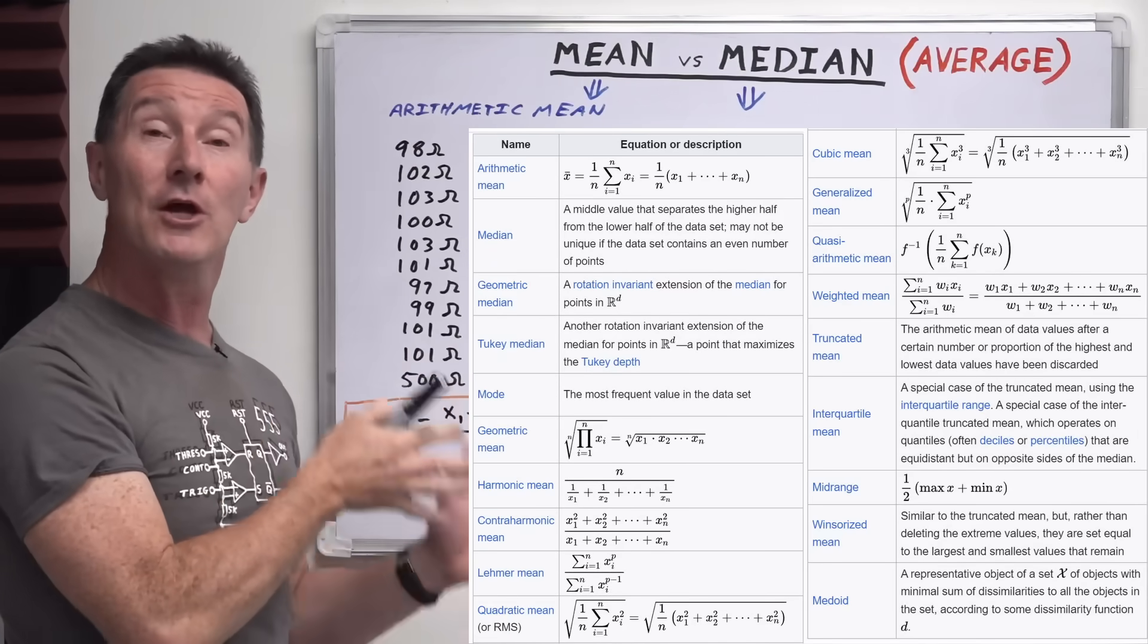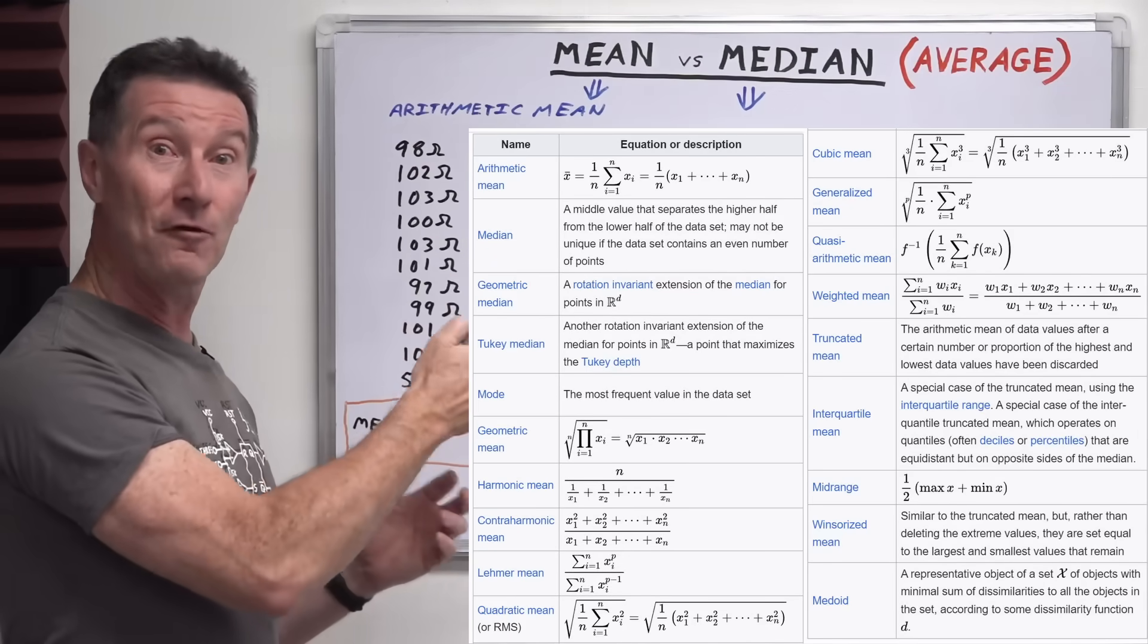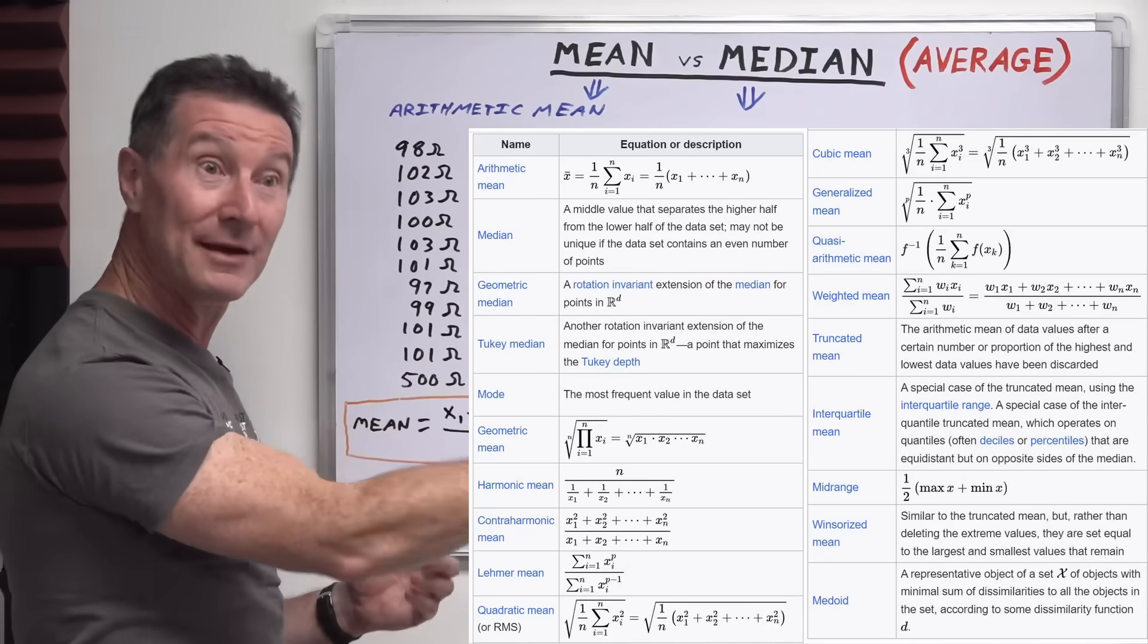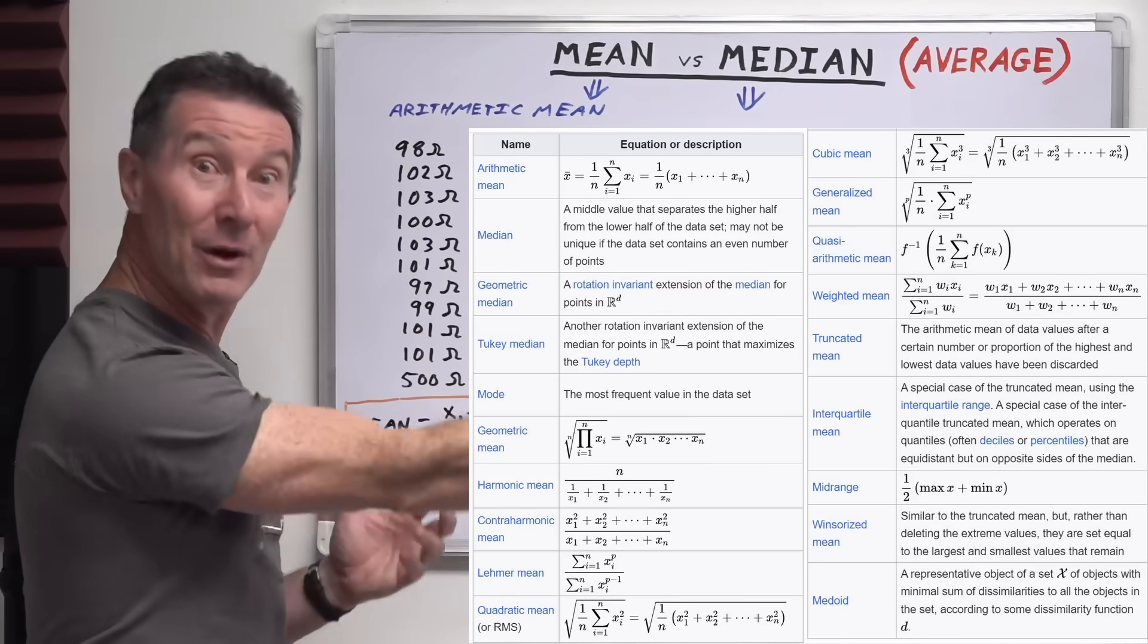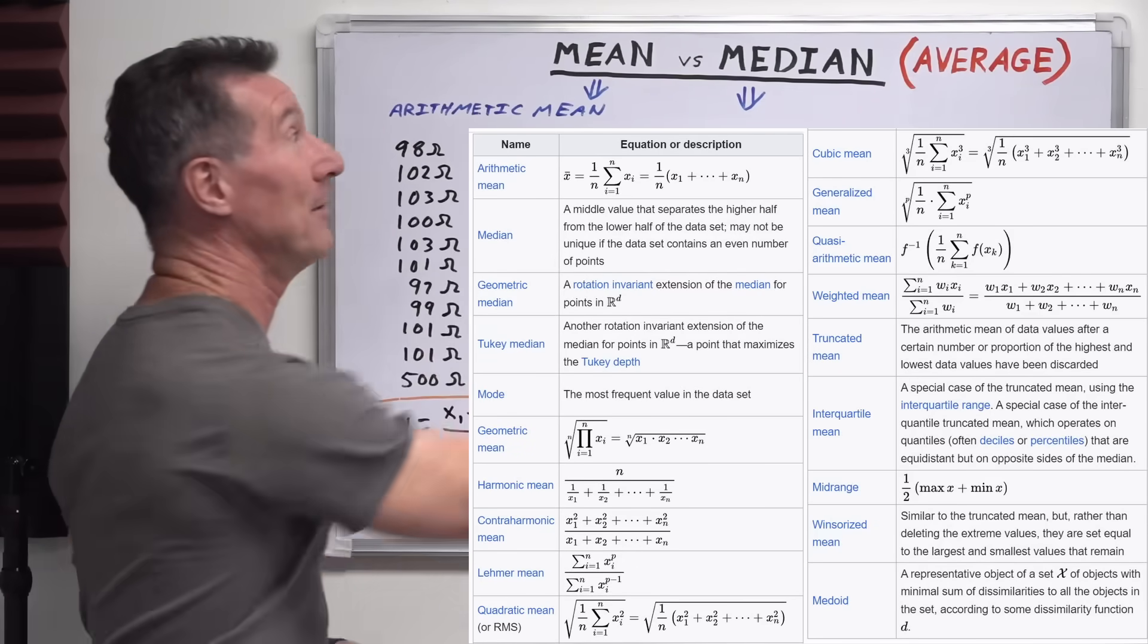Mean and median are just two of them. For example, RMS is actually another form of mean. It's a mean squared, hence RMS, root mean squared. So mean squared is actually another type of average.